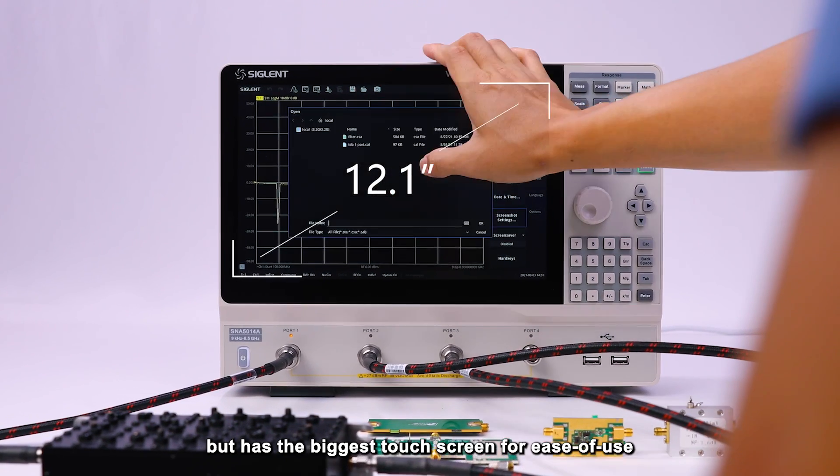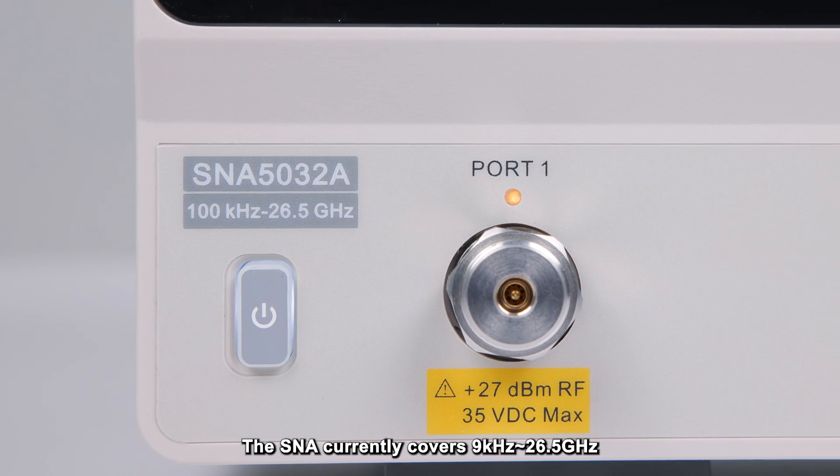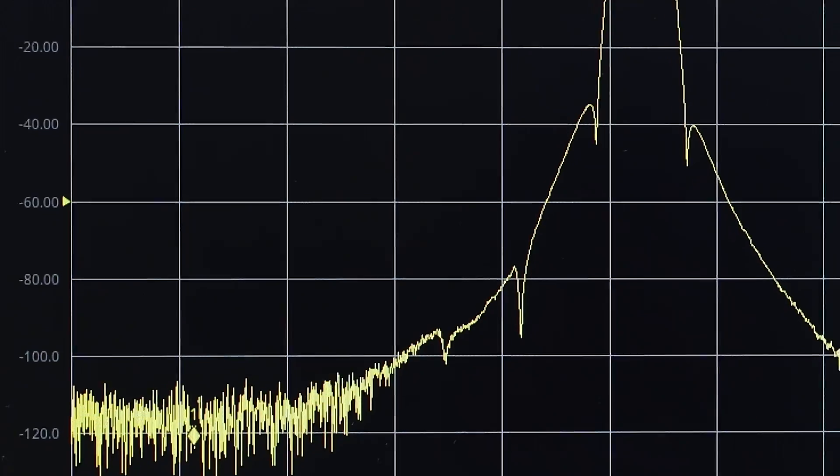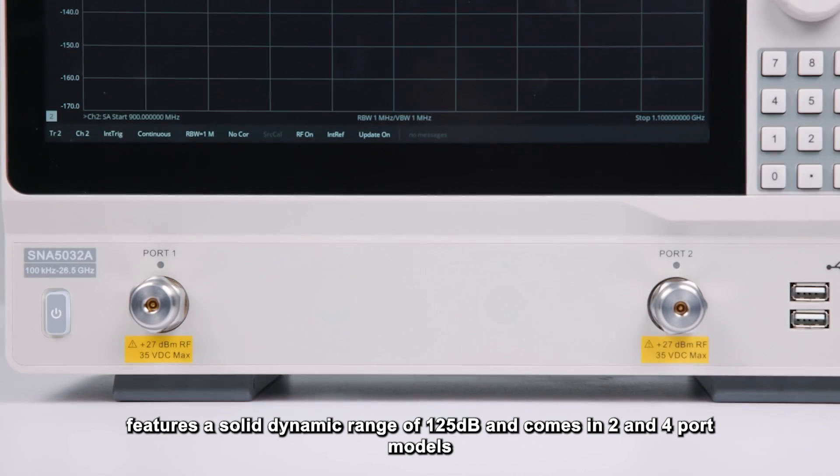But has one of the largest touch screens for ease of use. The SNA currently covers 9 kHz to 26.5 GHz, features a solid dynamic range of 125 dB, and comes in two or four port models.